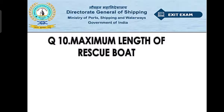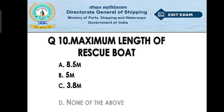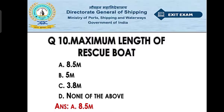Question number ten: what is the maximum length of a rescue boat? Option A: 8.5 meters. Option B: 5 meters. Option C: 3.8 meters. Option D: none of the above. The right answer is option A — 8.5 meters. The rescue boat is meant only for rescue purposes, not for carrying persons like a lifeboat. Its maximum length should not exceed 8.5 meters.